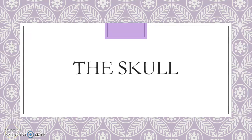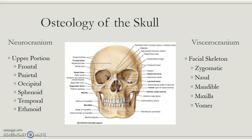This is Dr. Mayberry and this is our lab discussion for the skull. You need to know the difference between the neurocranium and the viscerocranium. The viscerocranium is the face and the neurocranium is the rest of the skull. I think it's easier to memorize the bones that make up the face, and then anything else is part of the neurocranium — that's the easiest way to go about it.